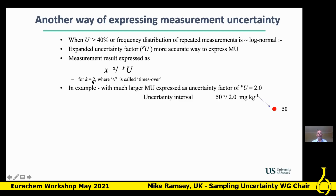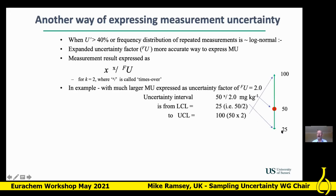For example, with a measurement result of 50 and an uncertainty factor of 2, you calculate the lower confidence limit by dividing by 2 and the upper confidence limit by multiplying by 2 — so it's 25 up to 100.